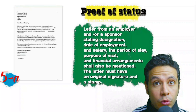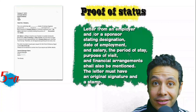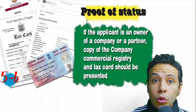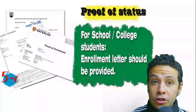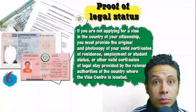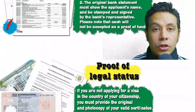You will also need a proof of status. If you are an employee, provide a letter from your employer or HR department stating your name, work details, salary, address, and contact numbers — with original signature and stamp. If you own a business, provide your commercial registry and tax card. Students must provide an enrollment letter from their school or university. If applying from a country different from your own, you need proof of legal residence or a valid residence visa.